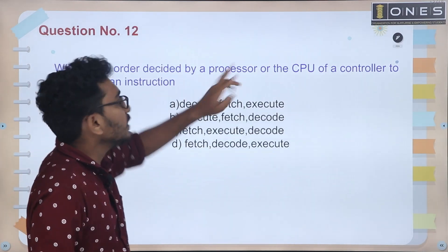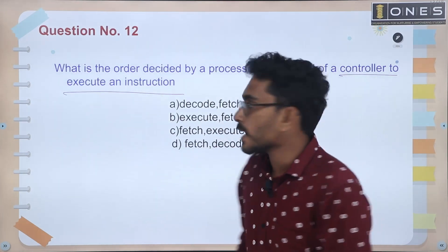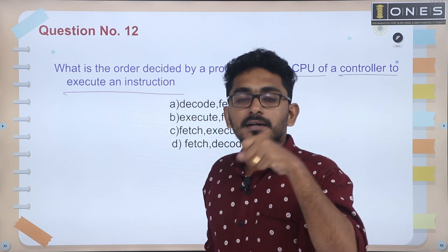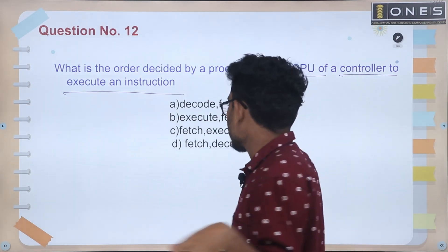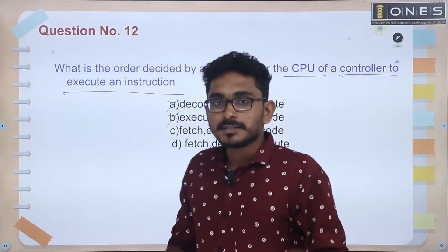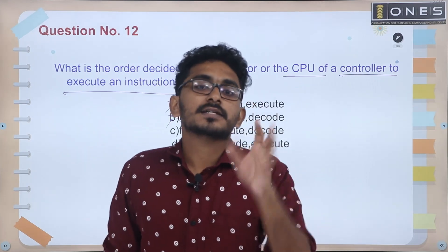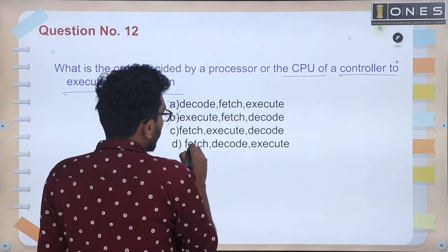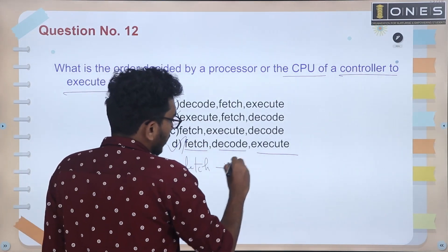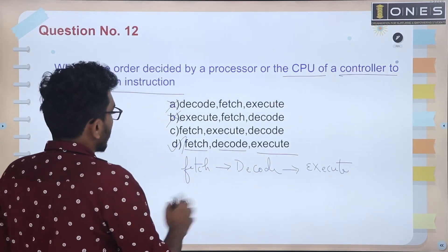Next question: what is the order decided by the microcontroller's CPU to execute an instruction? The order is: first, instruction fetch; second, instruction decode; third, instruction execute. This is the correct answer.